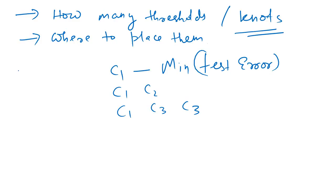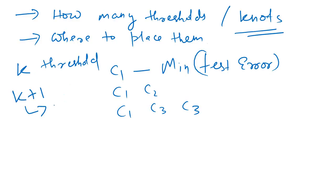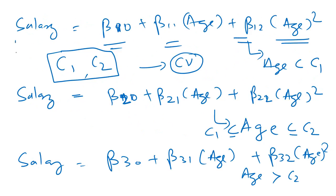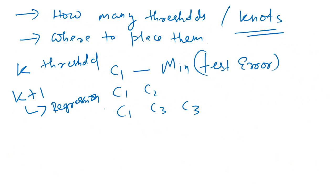So the idea is: split your data into a few segments and fit polynomial regression lines — known as regression splines. If you have k number of thresholds (knots), you will have k plus 1 regression lines. As we just saw, with two thresholds we fit three regression equations.